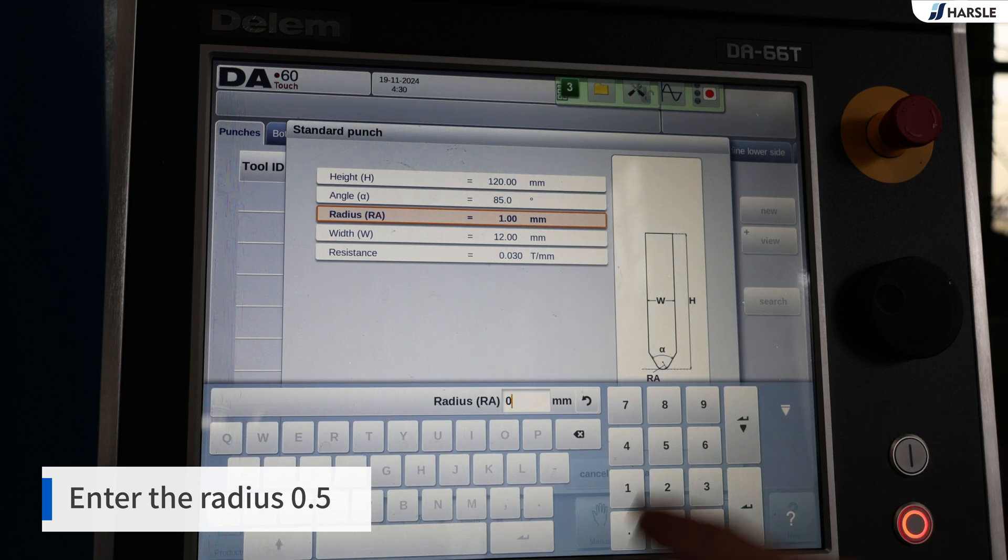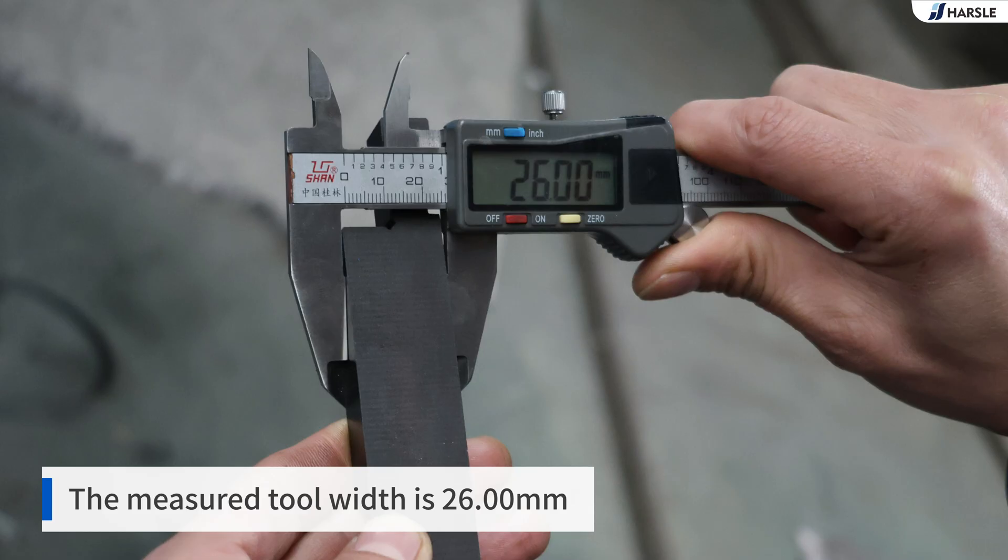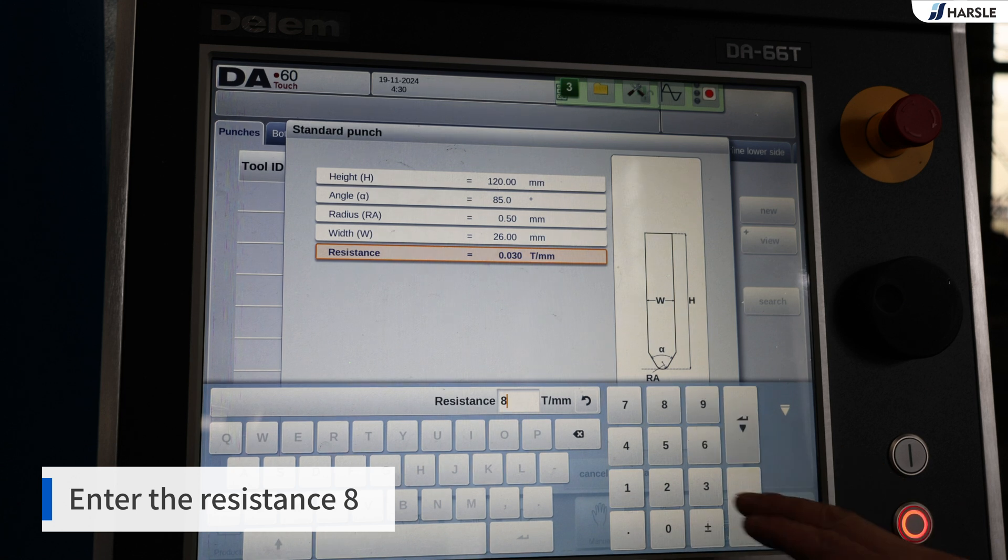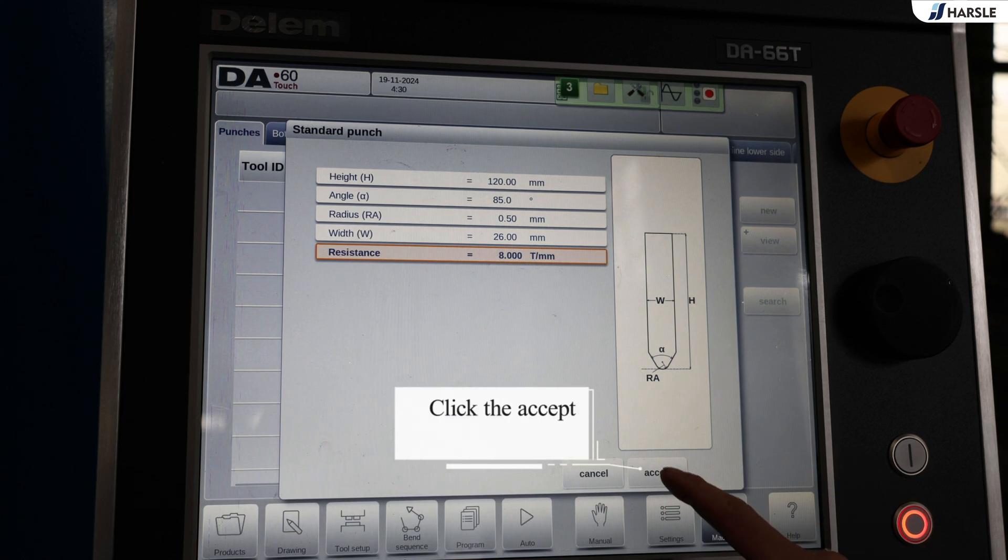Enter the radius 0.5. The measured tool width is 26 millimeters. Enter the punch width 26.00. Enter the resistance 8. Click the accept.